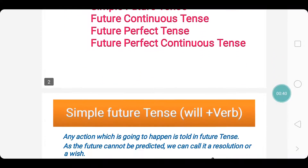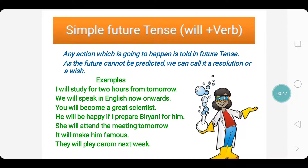Let us have a look into Simple Future Tense. What is Simple Future Tense? When do we use it? Any action which is going to happen is told in Future Tense. Now, we cannot predict the future, hence we can call it a resolution or a wish. Now look at the sentence pattern or the verb form used here — we use will plus verb.